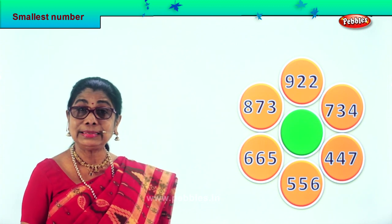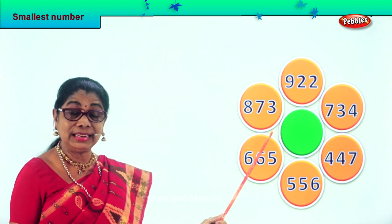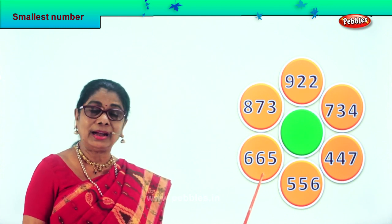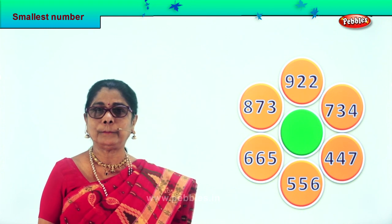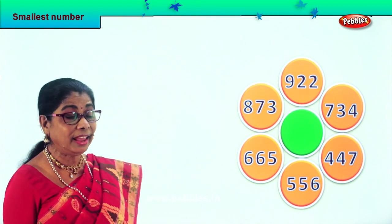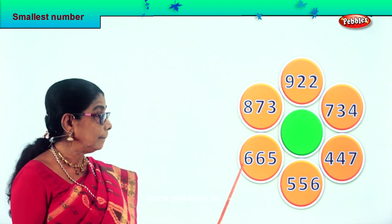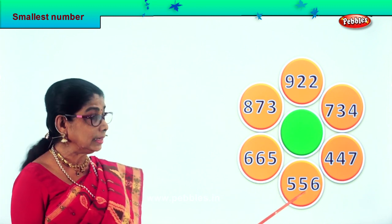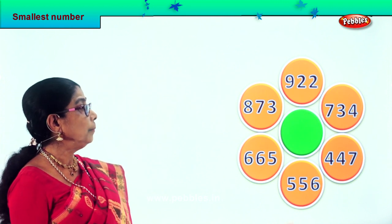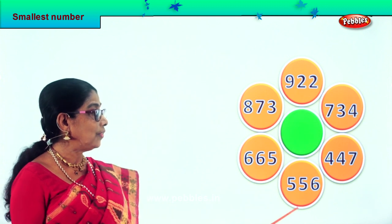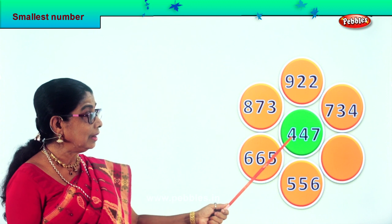Let's take another sum. Let's say the numbers aloud: nine hundred twenty-two, eight hundred seventy-three, six hundred sixty-five, five hundred fifty-six, four hundred forty-seven, seven hundred thirty-four. Let's look at all the hundreds places — nine, eight, six, five, four, and seven. Among all, four hundred is the smallest. So four hundred forty-seven is the smallest number among these.